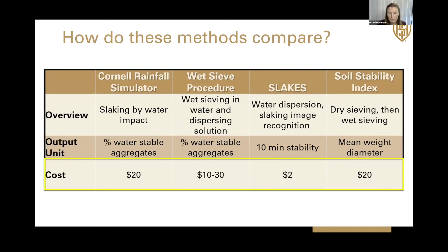We also want to look at costs, since economics is a very deciding factor when it comes to implementing these procedures. For most of these methods, the average cost is about $20 per sample. For Slakes, the app itself is free, but we calculated about $2 per sample based on your time and the small tools you'll need.